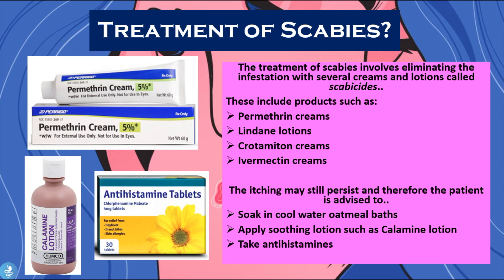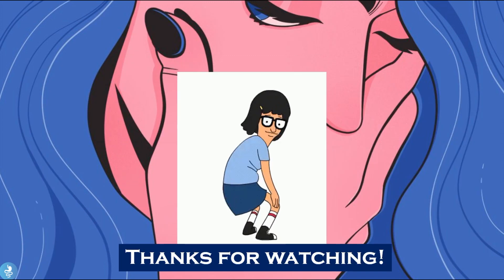Finally, let's talk about the treatment of scabies. Treatment involves eliminating the infestation with creams and lotions called scabicides, which kill all the mites, eggs, and pellets. These include products such as permethrin cream, lindane lotion, crotamiton cream, and ivermectin. Even after these creams are applied and the mites begin to die, itching may still persist, so the patient is advised to soak in cool water or oatmeal baths, apply soothing lotions such as calamine lotion, and take antihistamines to combat the itching.